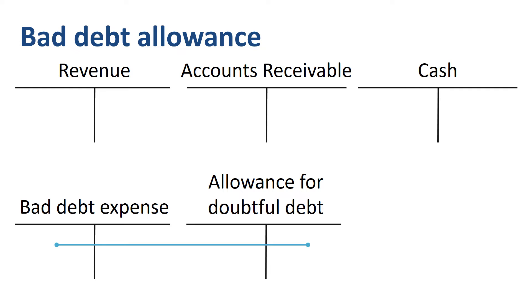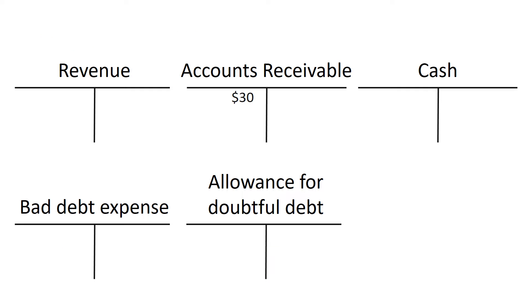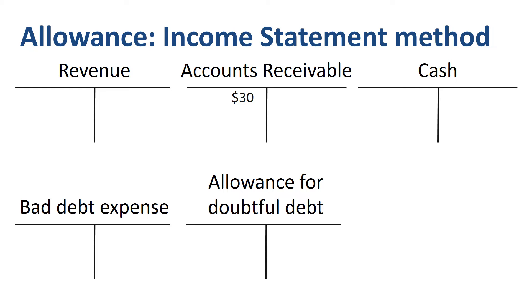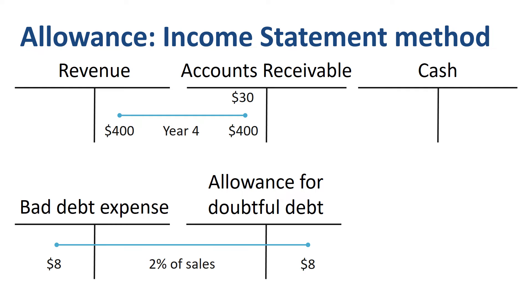There are several ways to calculate and record this allowance. The first method is called the income statement method, as it looks at income statement data to record the allowance for doubtful debt. Based on revenue of $400 in year 4 and historical write-offs of around 2% of sales, management decides to put aside $8 in the allowance for doubtful debt account.